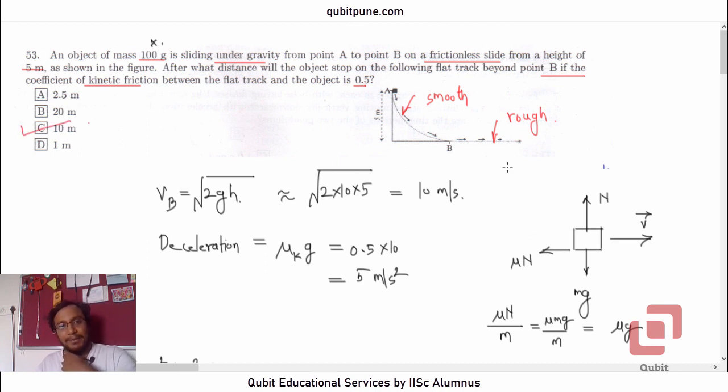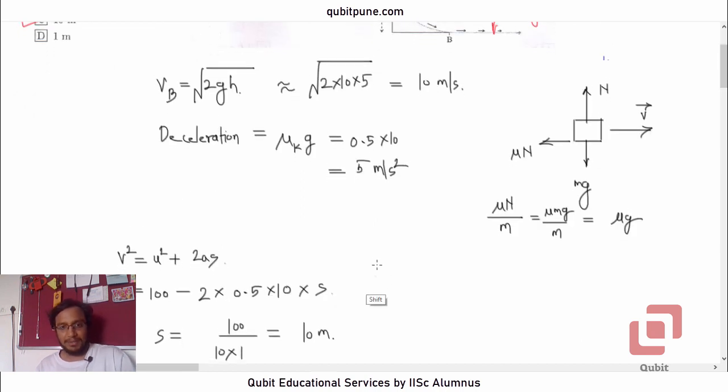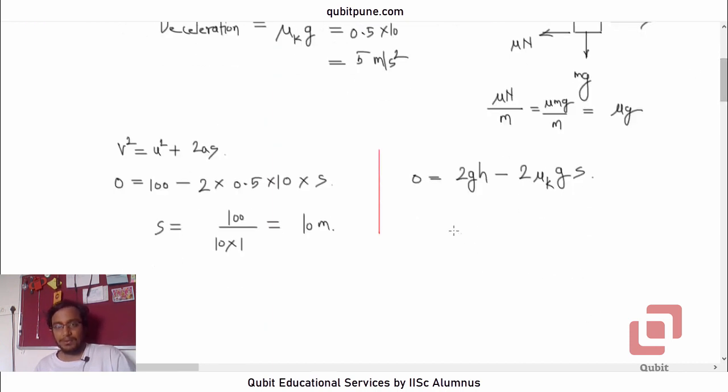Now, I think even if we had not approximated g, it would not have made any difference. If we had kept g right here in the expression for u squared. Let me just show you how that would have gone. So, it would have been 0 equal to 2gh minus 2 mu k g into s. Right? So, what would s have been? S would have been then equal to 2gh divided by 2 mu k g. Right? 2, 2 goes. G also goes.